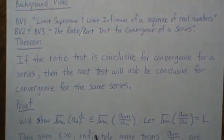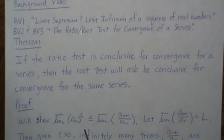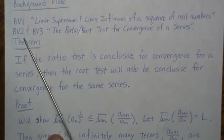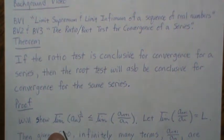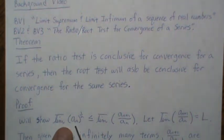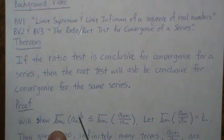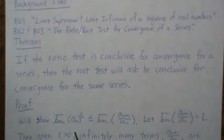We're going to prove this by looking at the limit supremum and the limit infimum of the series, and that's going to help us know whether it's convergent or not — based on background videos BV2 and BV3. We're going to show that the limit infimum of the ratio is greater than or equal to the limit infimum, and the limit supremum of this ratio is always greater than or equal to the limit supremum of the nth root of a_n.